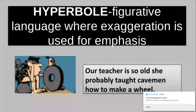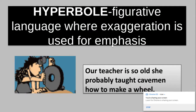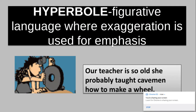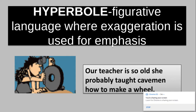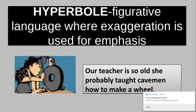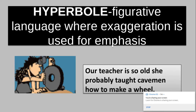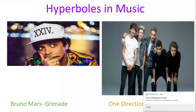We're going to talk about hyperboles today. A hyperbole is figurative language where exaggeration is used for emphasis. The example here is: 'Our teacher is so old she probably taught cavemen how to make a wheel.' That's an obvious exaggeration — obviously your teacher is not that old, but it's trying to prove a point.